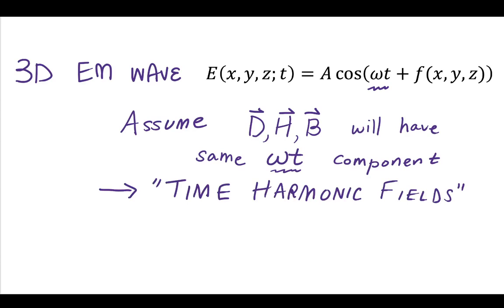So this means that we should call these time harmonic fields. This means that the electric field and the magnetic field have the same omega t, the same frequency variation component, and they could be considered a time harmonic field.